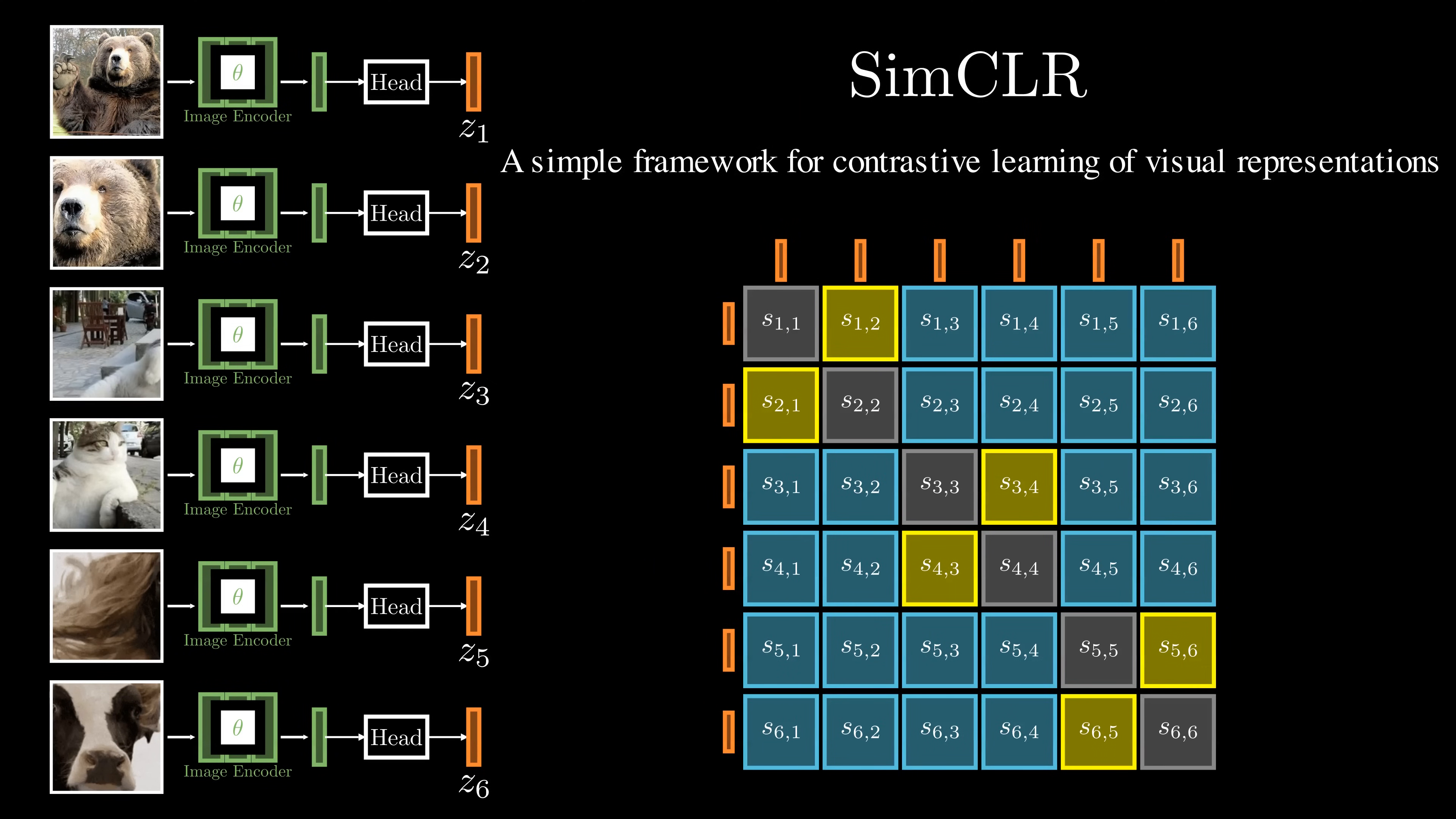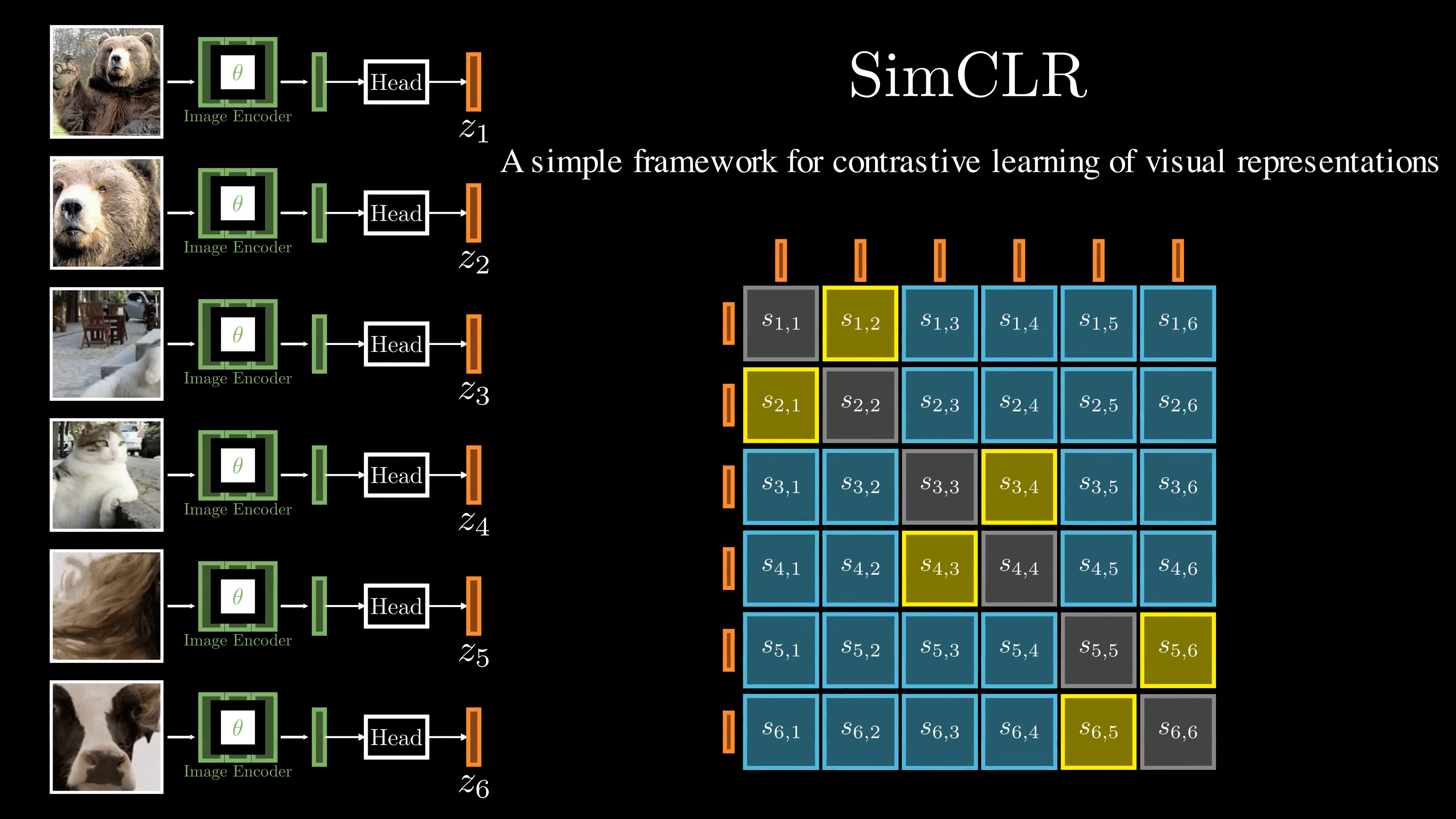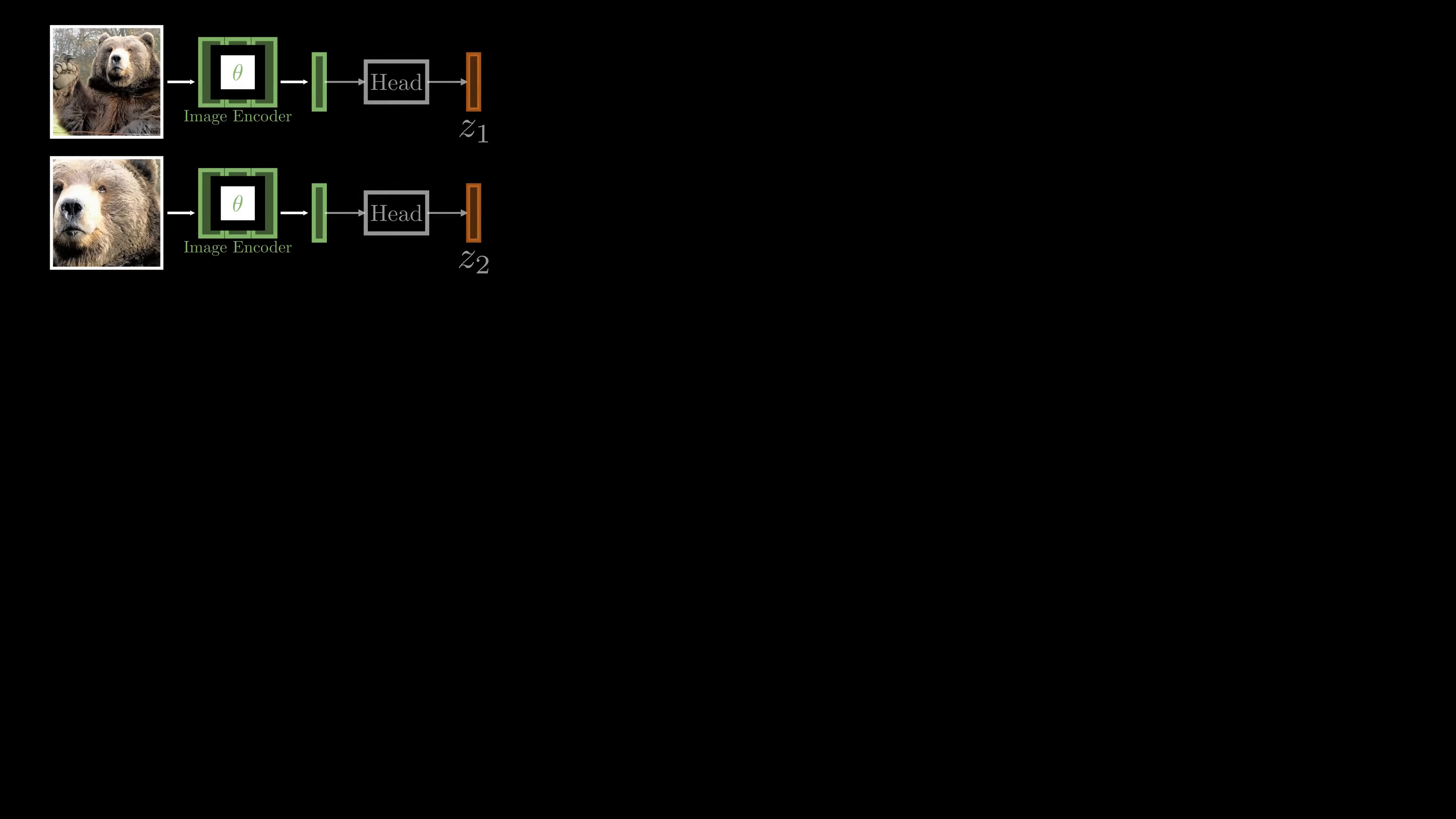While contrastive learning has been successful, making it work is challenging. The main issue is that it needs a large number of negative samples to avoid learning trivial representations. As a result, training requires very large batch size and is computationally expensive.